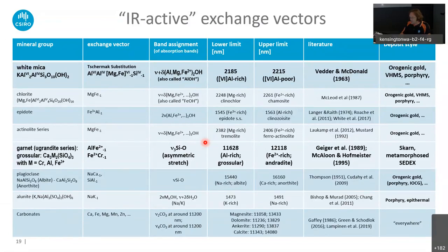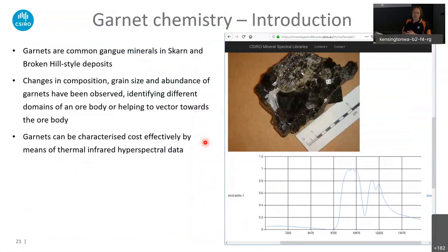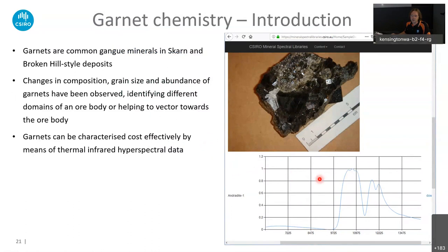Garnets are quite common gangue minerals in skarn deposits and also broken hill-style deposits. On the top right is a picture of one of our reference garnets from the spectral library we're putting together. Also shown here is a thermal infrared spectrum of that garnet, which you can access online from the CSIRO mineral spectral library. You can see this very distinct reflectance spectral signature of garnet — the shape roughly stays the same with different garnet compositions but it moves to shorter or longer wavelengths, and also changes with grain size and abundance.